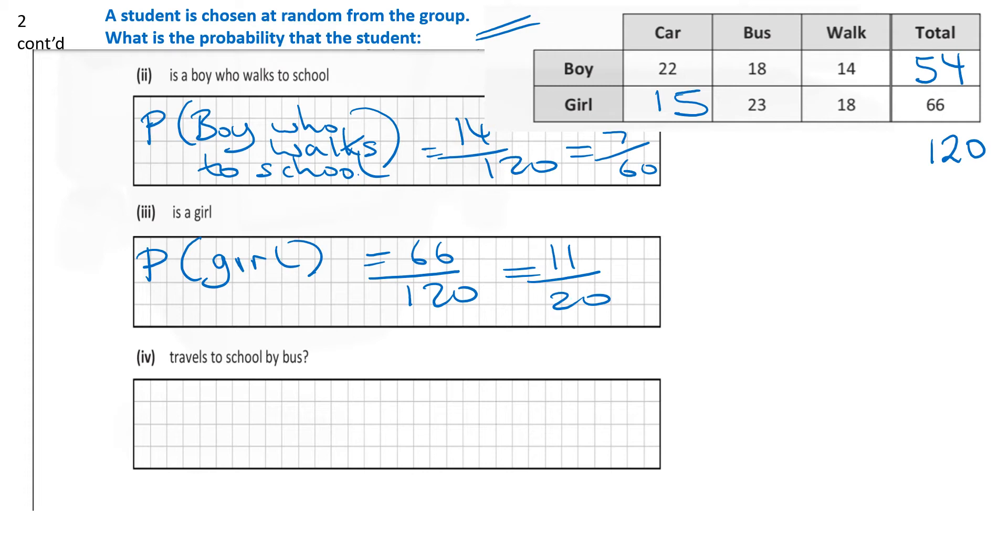And part 4 asks us what's the probability that a student travels to school by bus. So we can see here from our table that 18 boys and 23 girls travel by bus out of the total of 120. So 18 plus 23 over 120 is equal to 41 out of 120. And that fraction cannot be simplified any further.